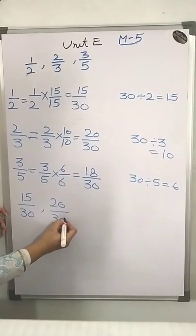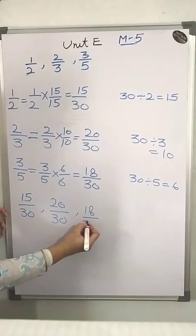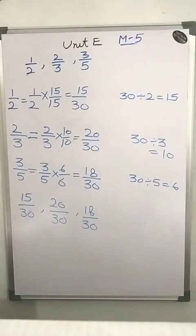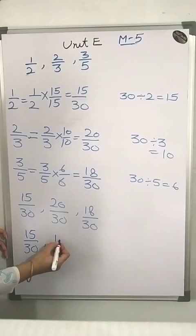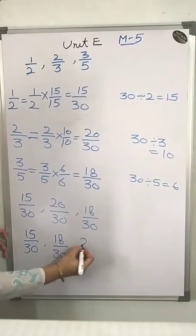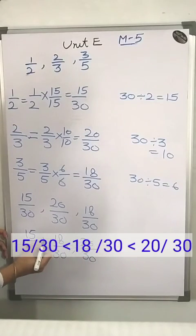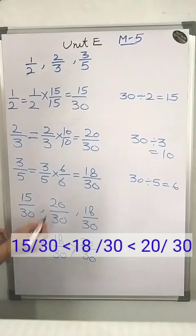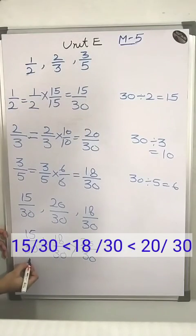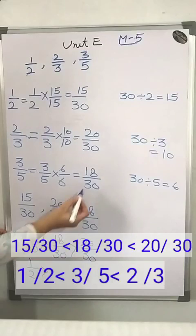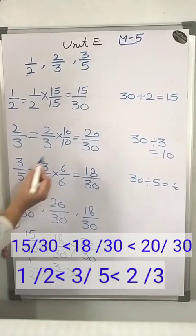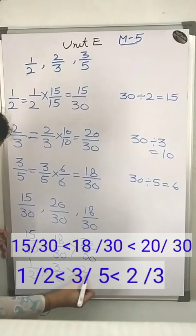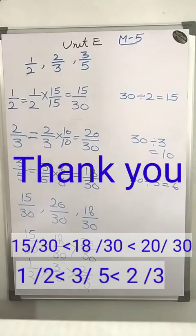Now comparing 15 upon 30, 20 upon 30, and 18 upon 30: the ascending order is 15 upon 30 < 18 upon 30 < 20 upon 30. Converting back: 15 upon 30 = 1 upon 2, 18 upon 30 = 3 upon 5, and 20 upon 30 = 2 upon 3. So the ascending order is 1 upon 2 < 3 upon 5 < 2 upon 3.